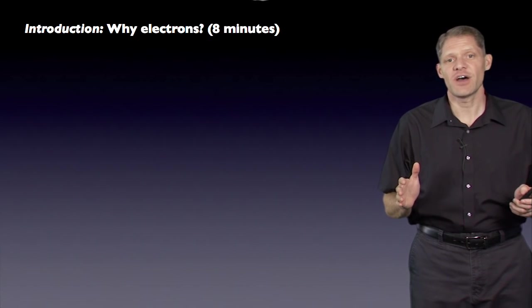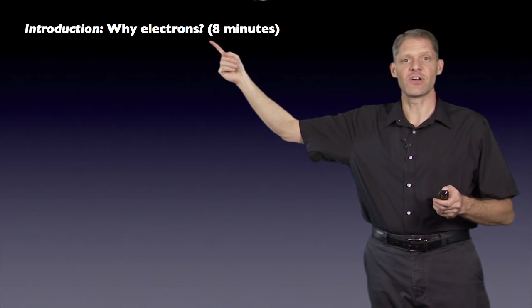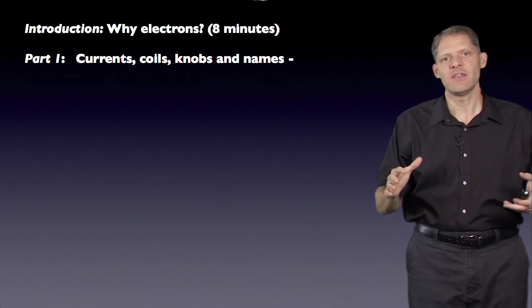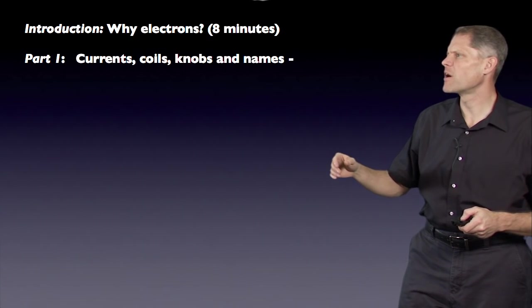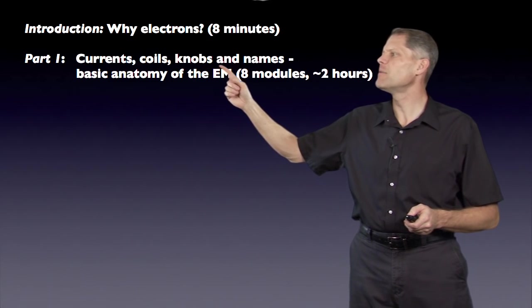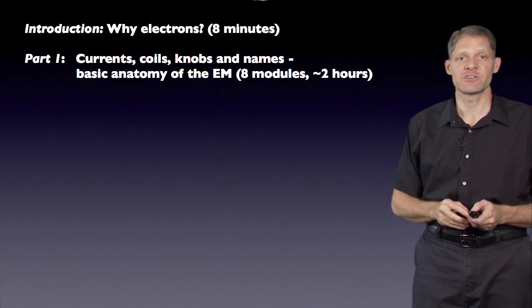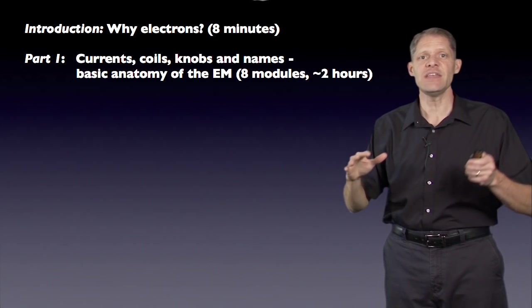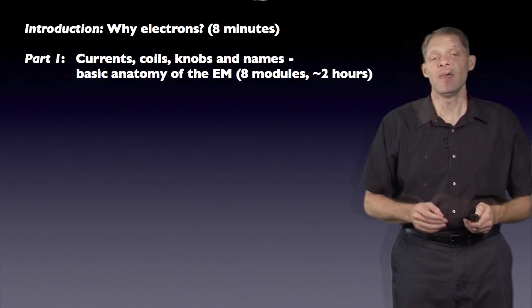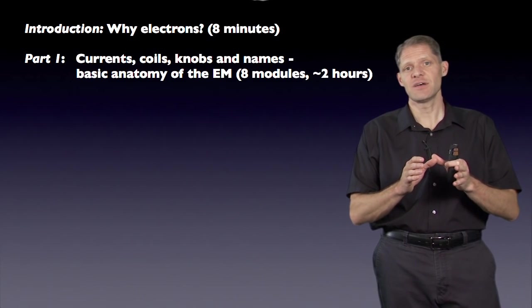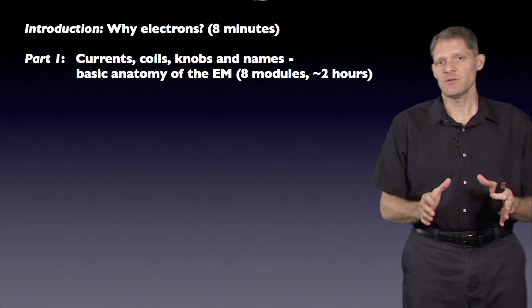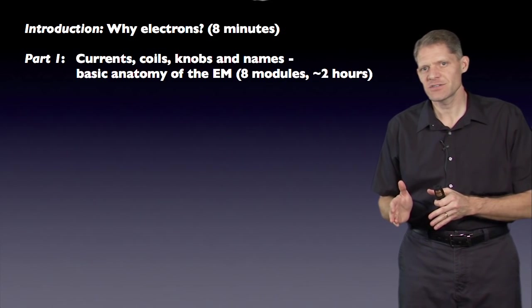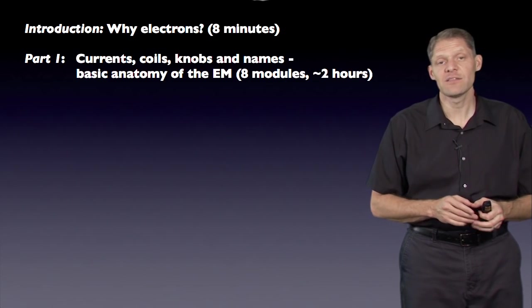We'll begin with an introduction about why use electrons, which is just a few minutes. Then there will be seven parts in the whole series. The first part is called Currents, Coils, Knobs, and Names — the Basic Anatomy of the Electron Microscope — with two full hours of material divided into eight different modules. In this part, I'll talk about electron guns, electron lenses, the rest of the column, the sample chamber, energy filters, detectors, vacuum systems, and a little bit about safety.